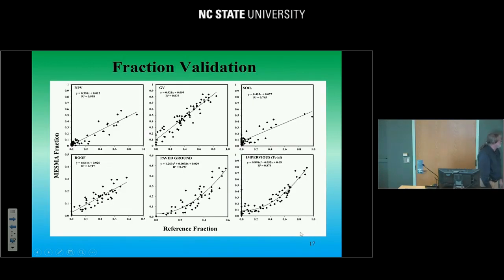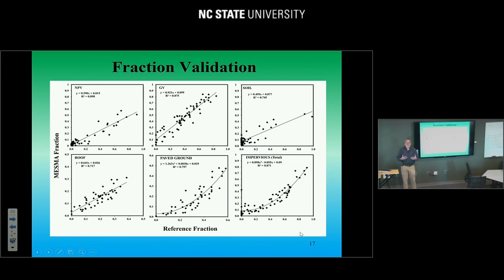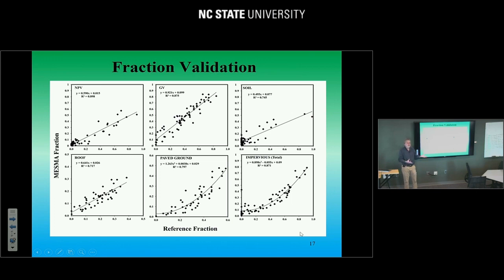On the vegetation side, shadows cast by a plant look like a plant, but it's actually asphalt being shadowed by a tree. We also looked at fraction validation, comparing NAIP data processed using eCognition versus our MESMA results, and got pretty good results — a high R-squared for NPV and GV. Not so good for soil, partly because there's not a lot of soil in this environment. We did pretty well with a nice linear relationship for roofs, but we see a non-linear relationship for paved ground and impervious. A lot of that is the confusion between roof and road, and between shadows cast by a tree — which looks like dark plant — but is actually asphalt.